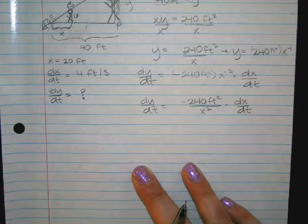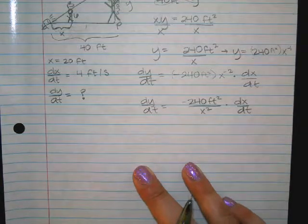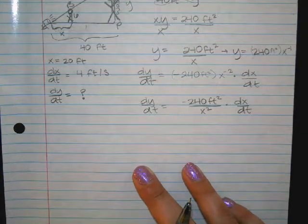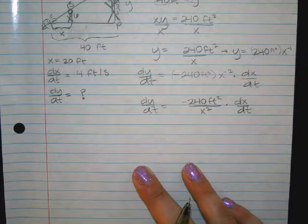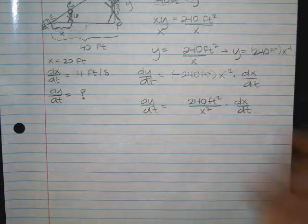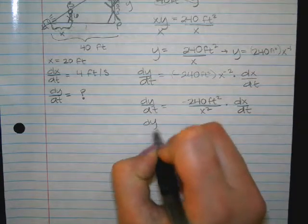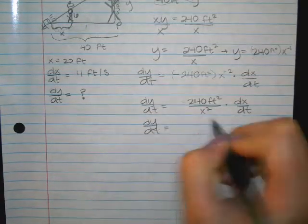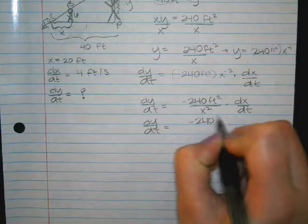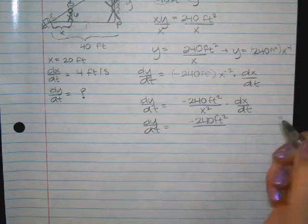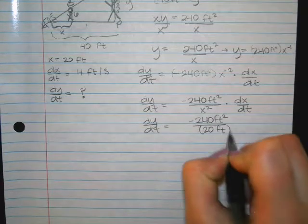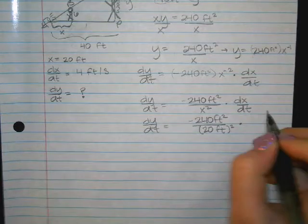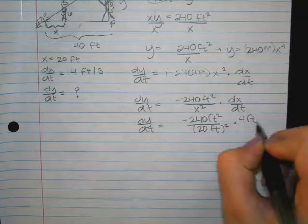Okay, remind me again how I knew it was a proportion and not a Pythagorean theorem? Two triangles, small one inside of a big one. Okay, all right, so what do I do now? Yeah, I plug myself in, right? All right, so I have dy/dt is what I'm solving for.